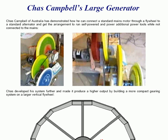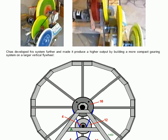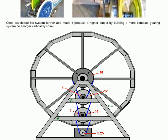Chas Campbell of Australia has demonstrated how he can connect a standard mains motor through a flywheel to a standard alternator and get the arrangement to run self-powered and additional power tools while not connected to the mains. This is a photograph of his original first demonstration set of equipment. Chas developed his system further and made it produce a higher output by building a more compact gearing system on a larger vertical flywheel.